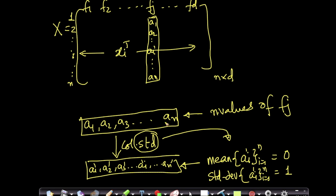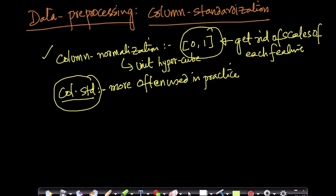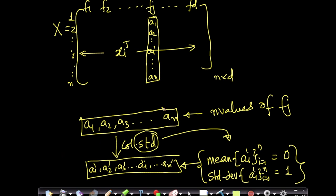Column standardization converts a1, a2, ..., aN into a1', a2', ..., aN' such that the mean of the transformed data is 0 and the standard deviation equals 1. In column normalization we ensured all values lay in the interval 0 to 1. Here instead, we're converting the data so that the mean is 0 and standard deviation is 1.